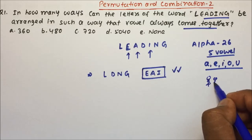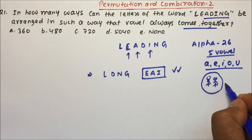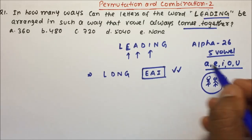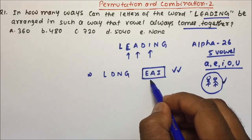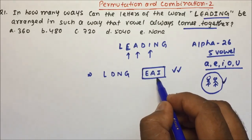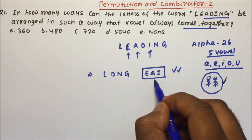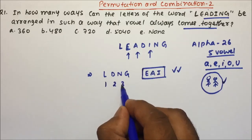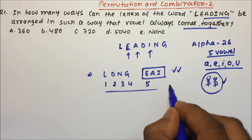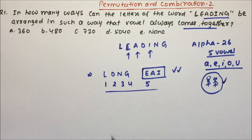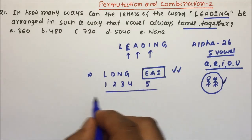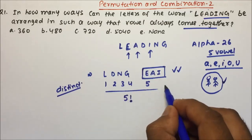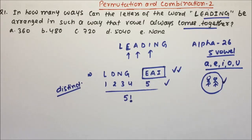If you want 2 persons to always be together, put them inside a house — they will always be inside that house. Similarly, put the 3 vowels inside a box and they will always be together. From outside, the box counts as only 1 unit. So the remaining consonants are L, D, N, G — that is 4 letters — plus the box, giving us 5 distinct letters total. These 5 distinct letters can be arranged in 5 factorial ways.